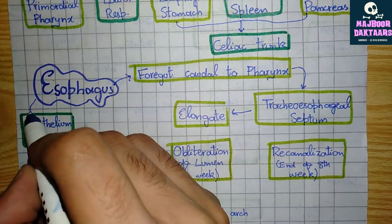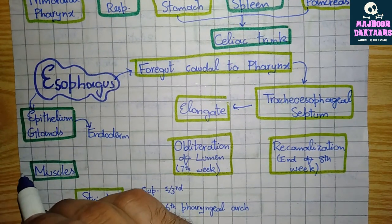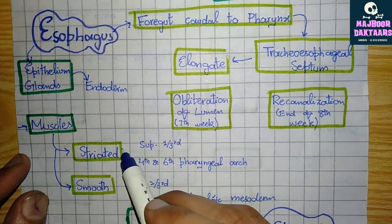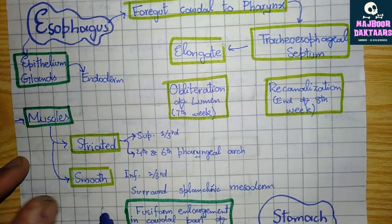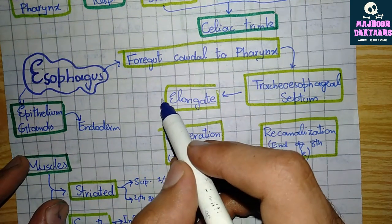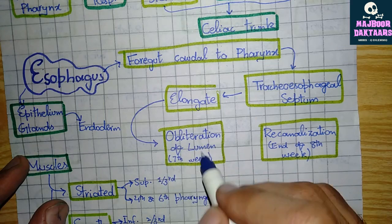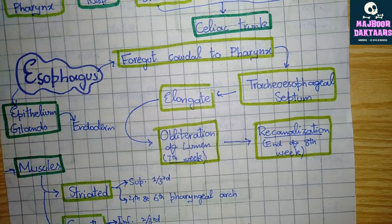The epithelium and glandular portion of the esophagus is formed by the endoderm of the foregut, while the muscular portion consists of two parts: the striated and the smooth muscular portions. The superior one-third of the esophagus is striated and is formed by the fourth and sixth pharyngeal arches, while the inferior two-thirds are smooth and formed by the surrounding splanchnic mesoderm. The lumen of the esophagus is obliterated during the seventh week, but re-canalization occurs by the end of the eighth week.